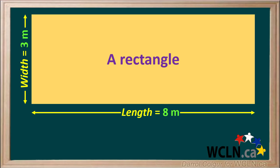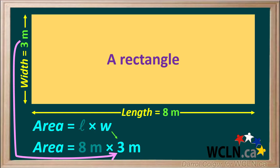We'll look at this rectangle as an example. Its length is 8 meters and its width is 3 meters. We'll find the area of this rectangle using the formula area equals L times W. The length L is 8 meters and the width W is 3 meters.